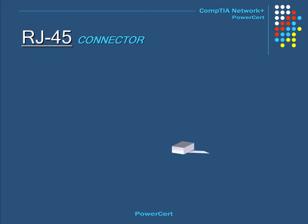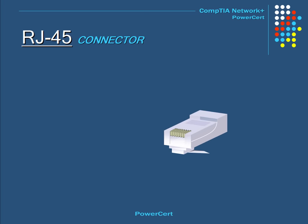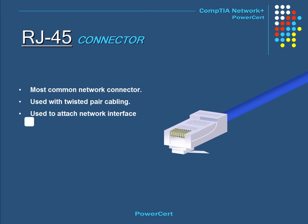The RJ45 is by far the most common network connector. This is an eight-wire connector used to connect computers to local area networks. Like the RJ11, it also locks itself into place by a hinged locking tab, and it resembles the RJ11 but is a little bit larger.